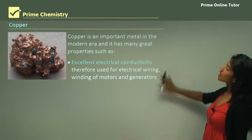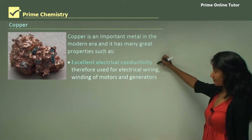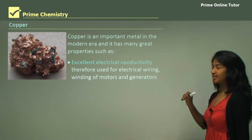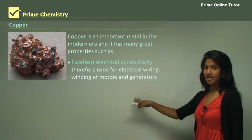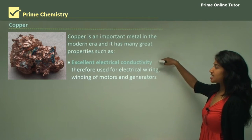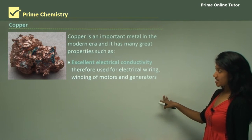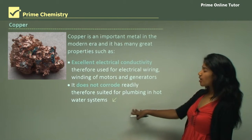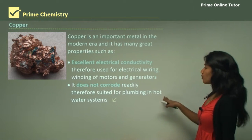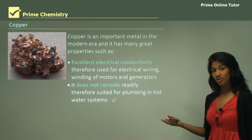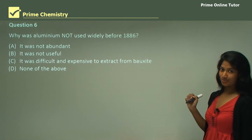Now, copper. Copper is an important metal in the modern era and has many great properties. The first is that it's an excellent electrical conductor, used widely for electrical wiring and also for windings in motors and generators. Electricity is widely used in the modern era for everything, and copper is used with it. It does not corrode readily, therefore it is suited for plumbing in hot water systems. Hot water systems require a material that does not corrode because that way it's longer lasting, and copper is a really good material for that.